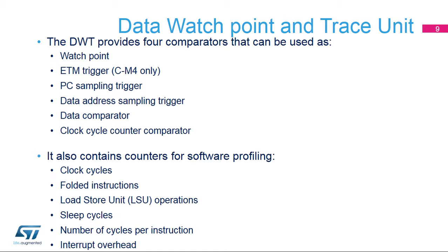On a successful match, the comparator generates one of the following: one or more DWT data trace packets containing the address of the instruction that caused a data access, an address offset (bits 15 to 0 of the data access address), or the matched data value. It can also generate a watchpoint debug event on either the PC value or the access data address, or a CMP match N event that signals the match outside the DWT unit.